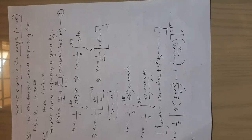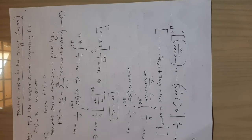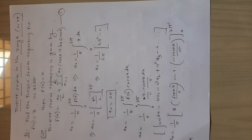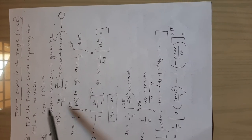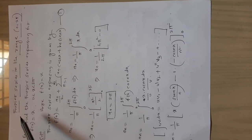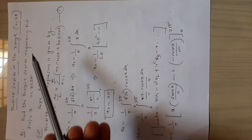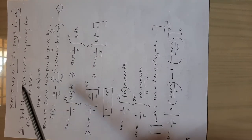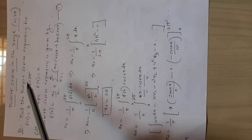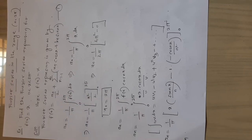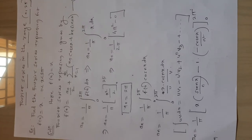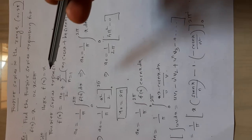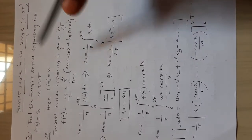Now we will discuss Fourier series in the range 0 to 2π. For that I will take one example: find the Fourier series expansion for the function f(x) = x, where x lies between 0 to 2π. Now we will solve this example. Here f(x) = x.